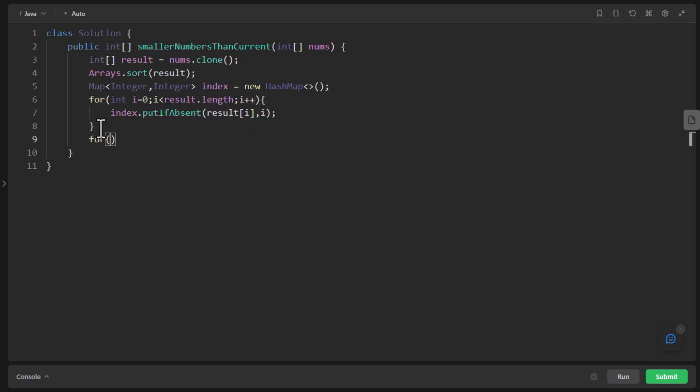Once we have this map ready, we can again iterate this time on the nums array. We can now change the value at this index array directly getting the index from this index hash map and this particular position. Once we are done, we need to simply return the result array. And that completes the coding part.